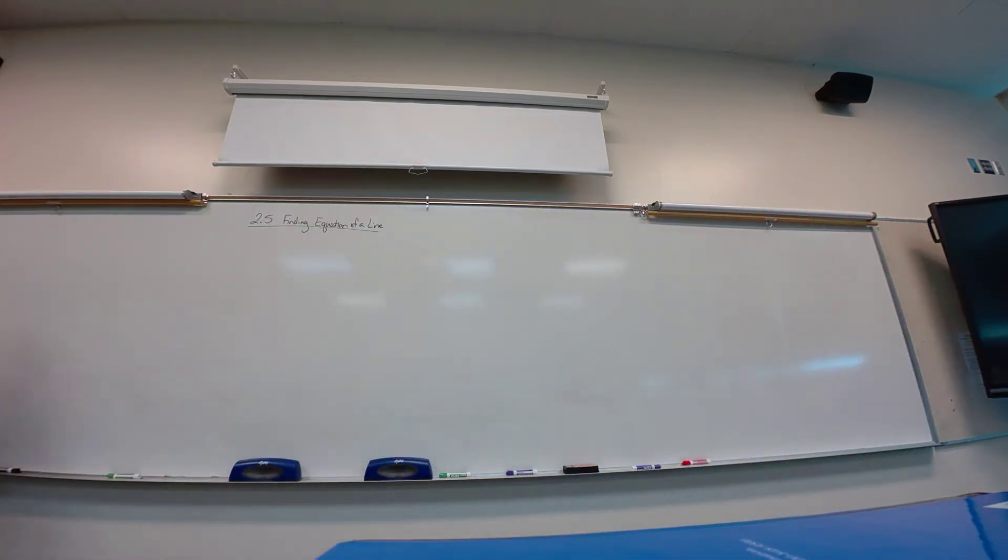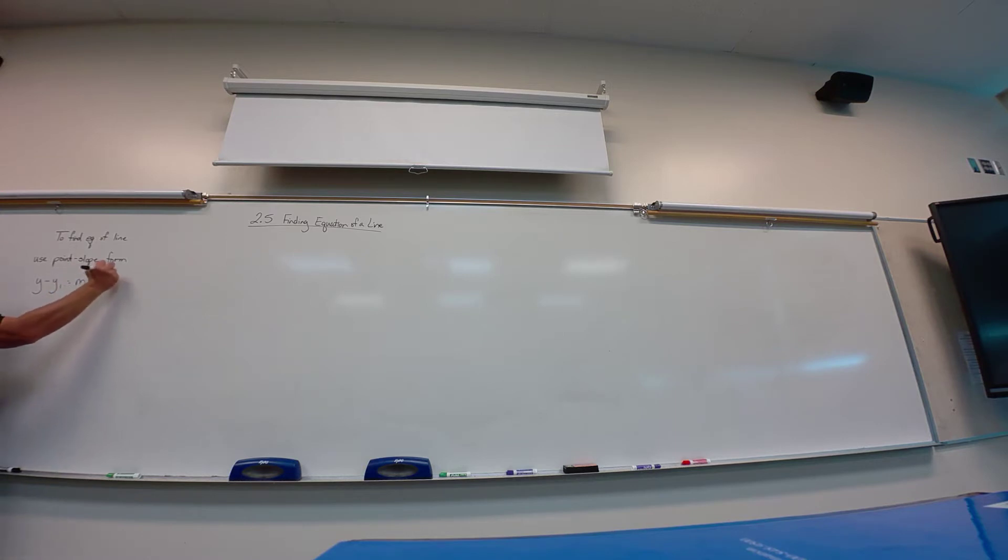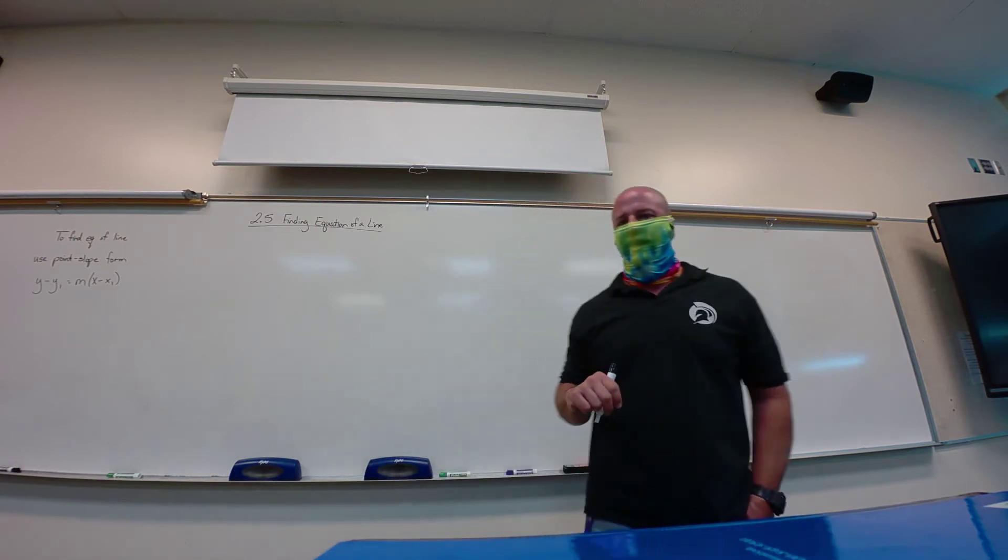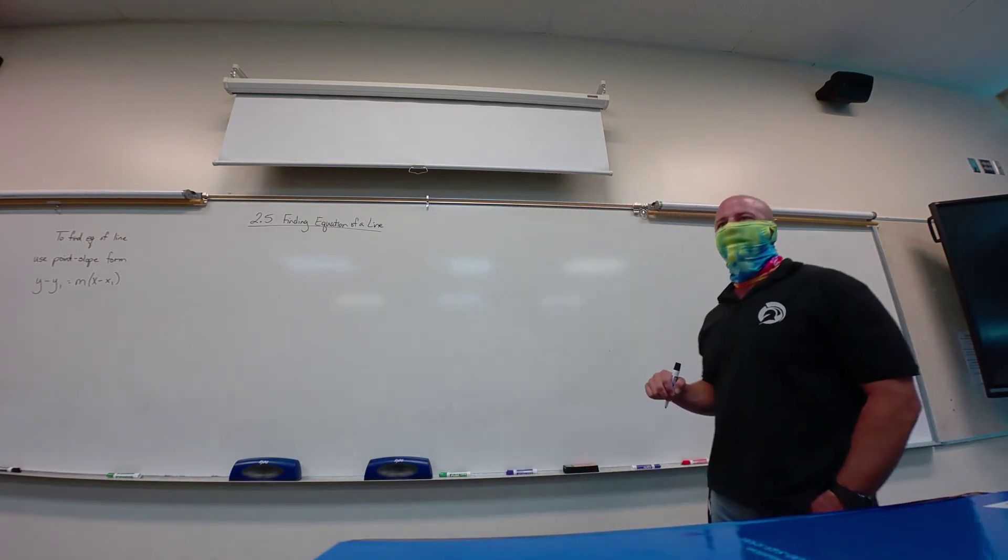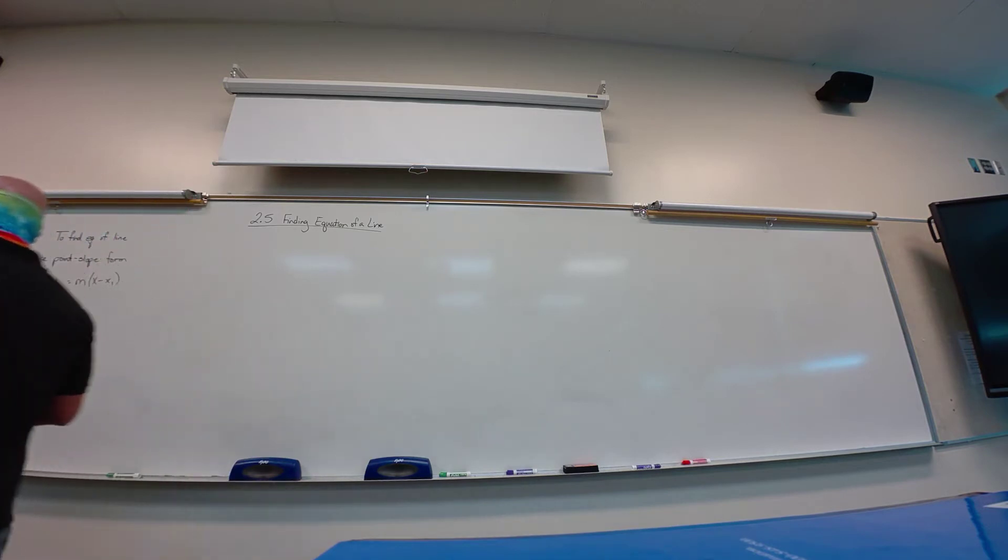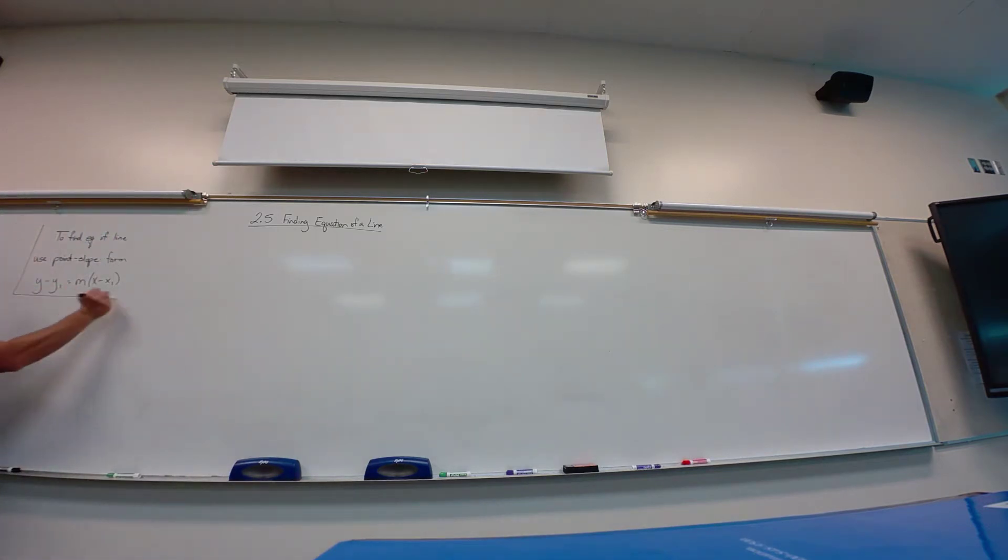And so to find our equation of a line, we're going to use point-slope form. So we'll use the point-slope form, which is y minus y1 equals m(x minus x1). So the point-slope form just means that we actually need a point and a slope to find that equation. We need the point and a slope to find the equation. If we have those two things, we can find it. Now, you've seen some other equation writing. This is what we're going to use to find. We've seen this.